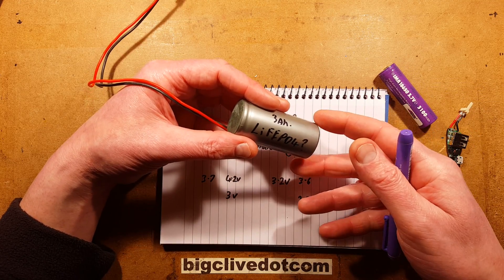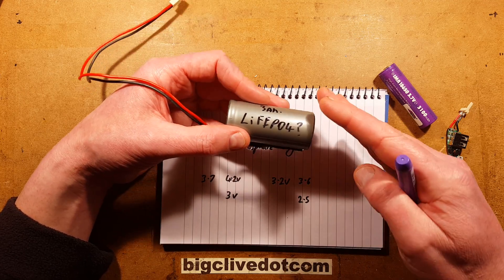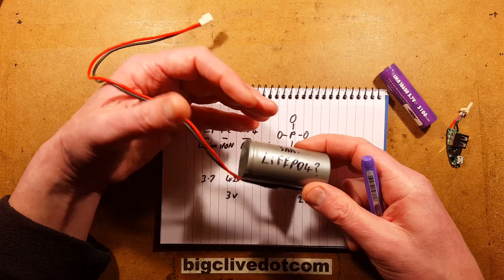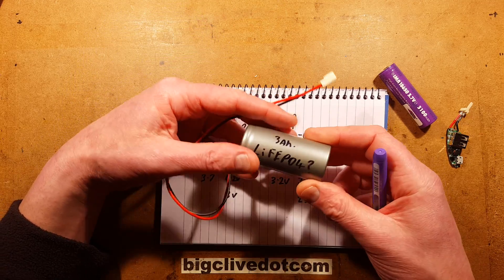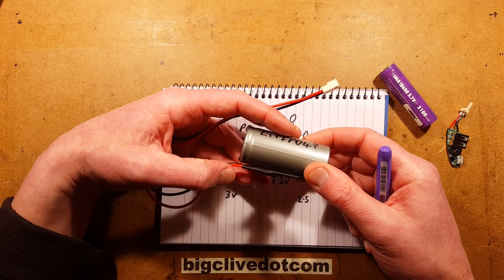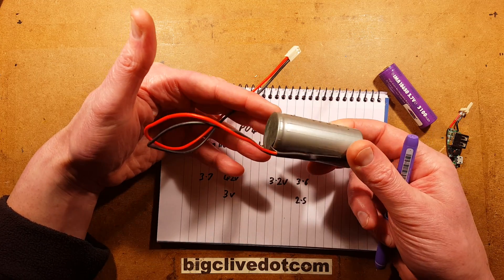And the charge-discharge cycles, at least 2,000, but potentially depending on the technology and gradually reducing capacity over time, they're looking at 5,000 or more. And when you think streetlight, every single day it's getting charged and discharged—that's 365 cycles a year. So that is going to extend the life of it considerably.